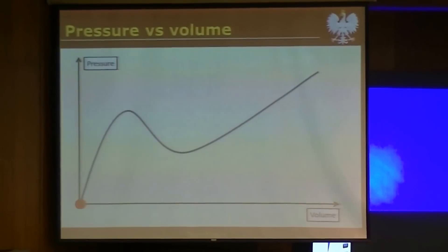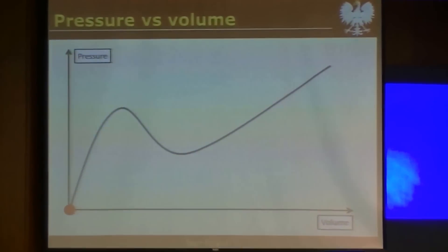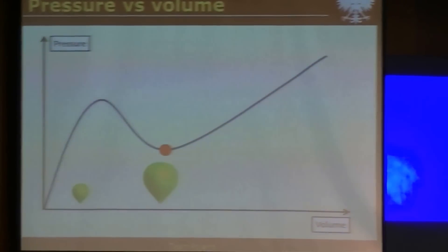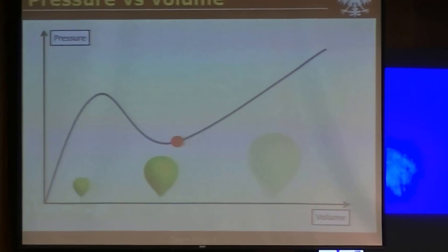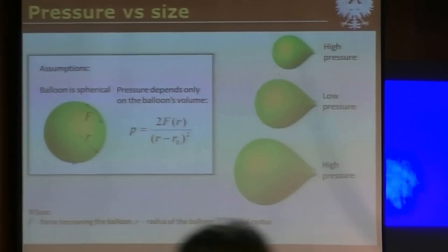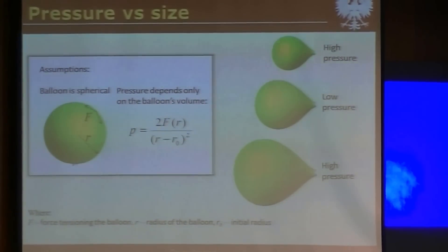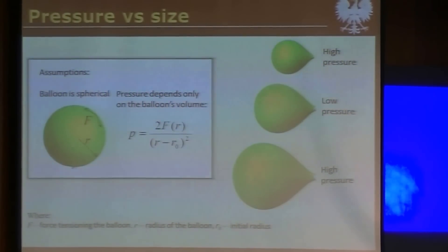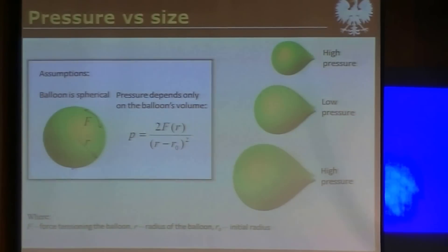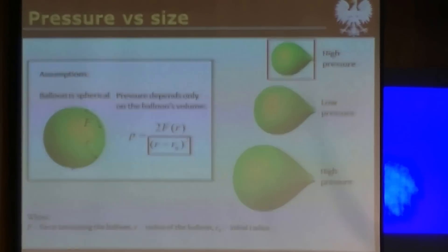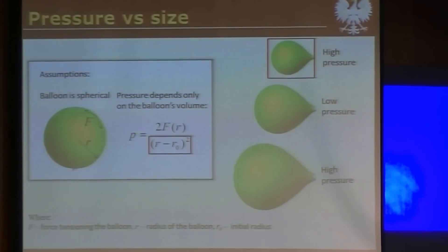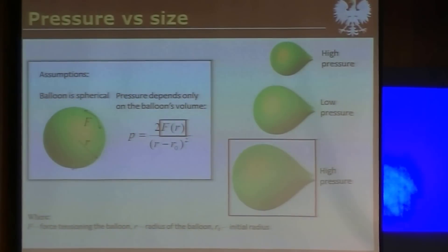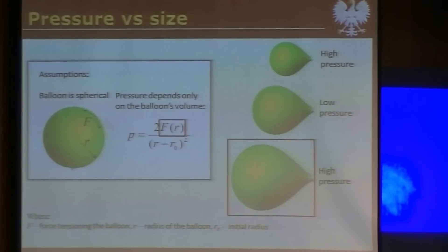When I try to pump a balloon, firstly it is very hard, then it is becoming easier. The balloon is becoming bigger and bigger, and when it is very large, the surface is very stiff and it is hard to pump it again. We describe the pressure inside the balloon depending on its size. Assuming the balloon is spherical, it turns out that in small balloons the pressure will be high because the pressure decreases with radius squared. Additionally, in big balloons we obtain high pressure because the pressure will be proportional to the stiffness of the surface.